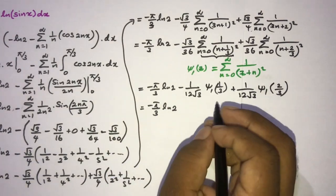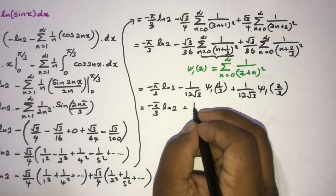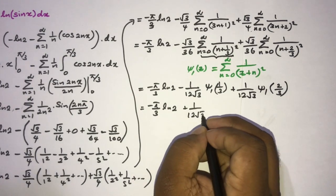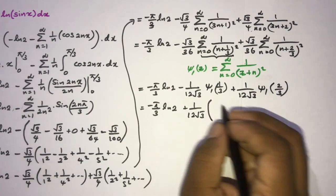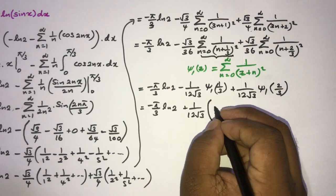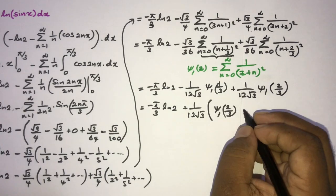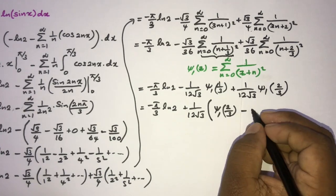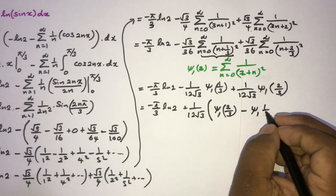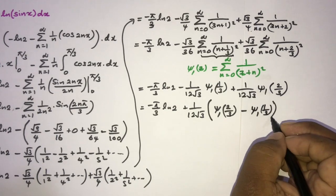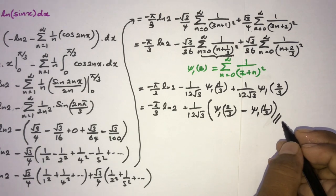Taking (1/(12√3)) as a common factor, we have minus (π/3) ln(2) plus (1/(12√3)) times (ψ₁(2/3) minus ψ₁(1/3)). This is the answer using the trigamma function.